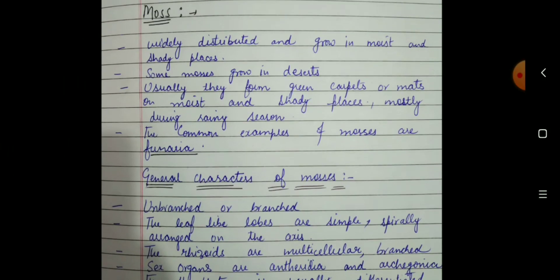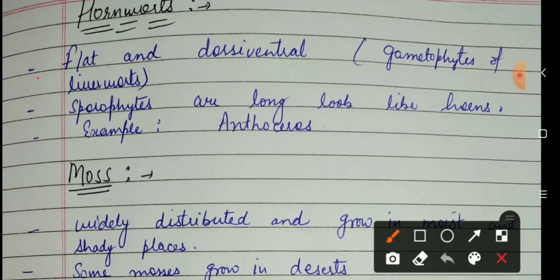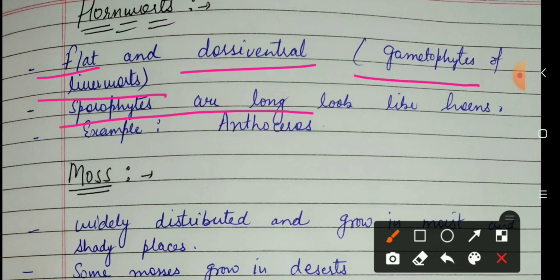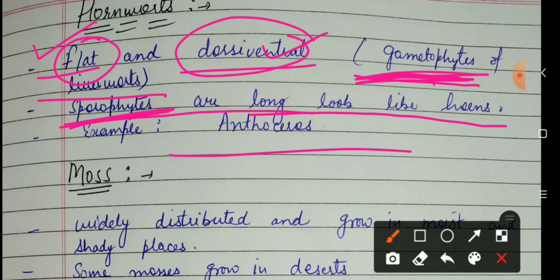Next is hornworts. The gametophyte of hornworts is also flat and dorsiventral. But the sporophyte is long and looks like a horn. An example is Anthoceros. For a one-mark question: the gametophyte is flat and dorsiventral, while the sporophyte body is long like horns.